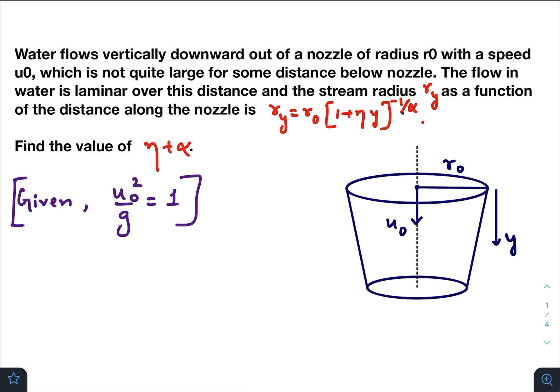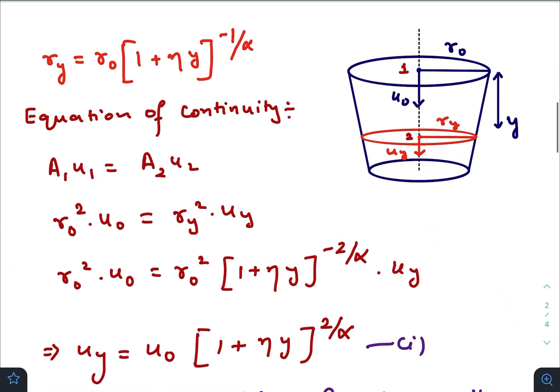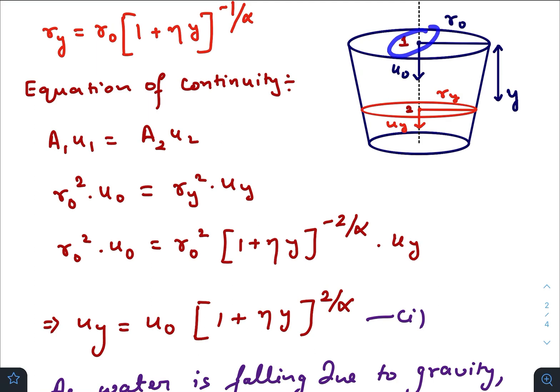When the water comes down by a distance y, if we apply equation of continuity at point 1 and point 2, it would be A1 u1 equals A2 u2. So u1 is nothing but u0, area is the cross-sectional area r0 square circular area, and here it will be r_y square u_y.